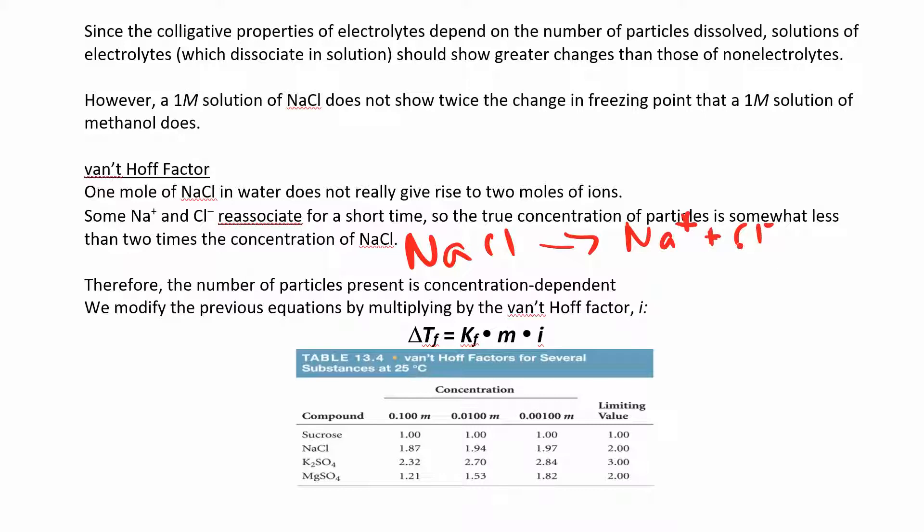No, because some of these ions are going to reassociate. So you don't really get a hundred percent dissociation. But we're going to take the limiting value there. We'll take the maximum and say something like sodium chloride will dissociate. It's a strong electrolyte, right? It's a soluble ionic compound. It's going to dissociate into two particles.